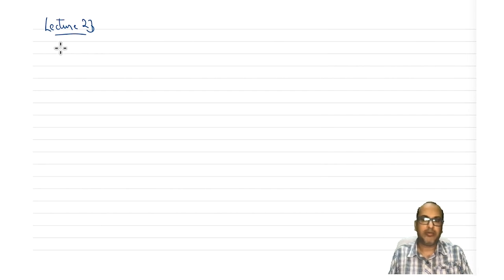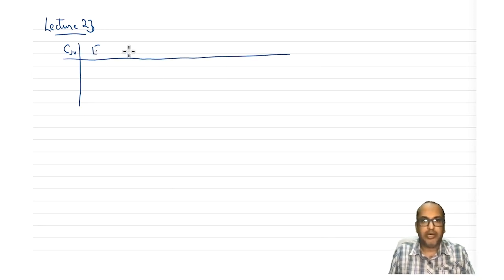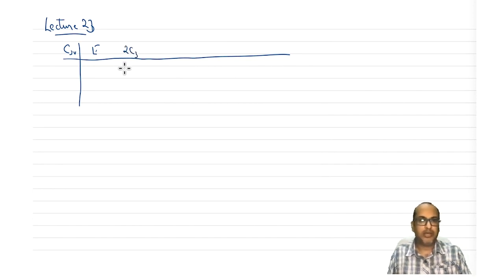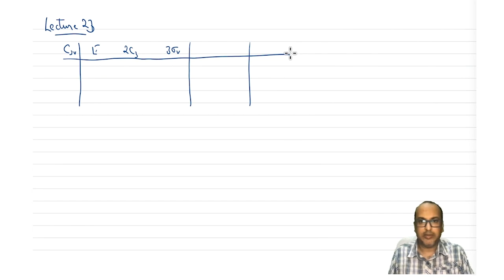So far we have been looking at actually a partial character table. Let's again take the example of C3V because we now know all the elements of this character table, at least some of it. Let's see what the different areas in this are and what the meaning of those areas is. If you look at any textbook, you will see the character table is divided into certain areas.